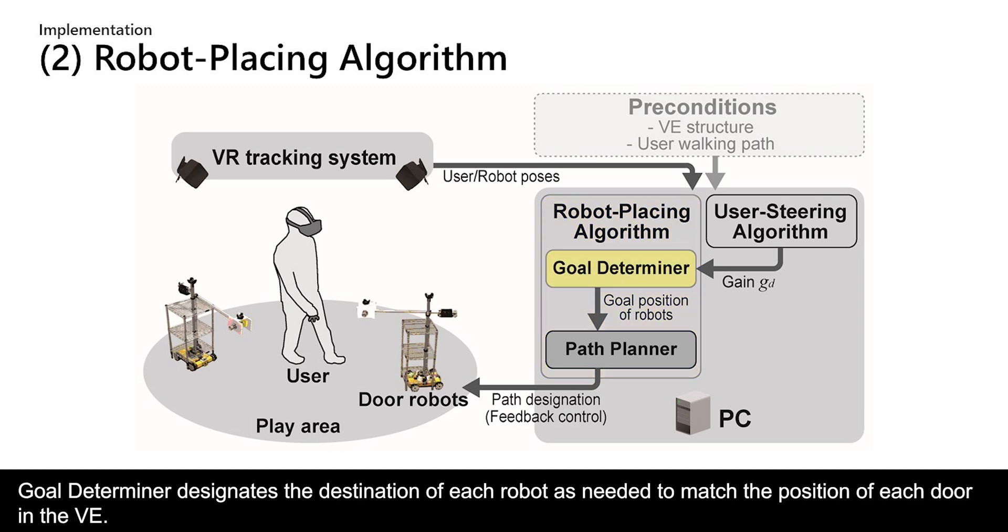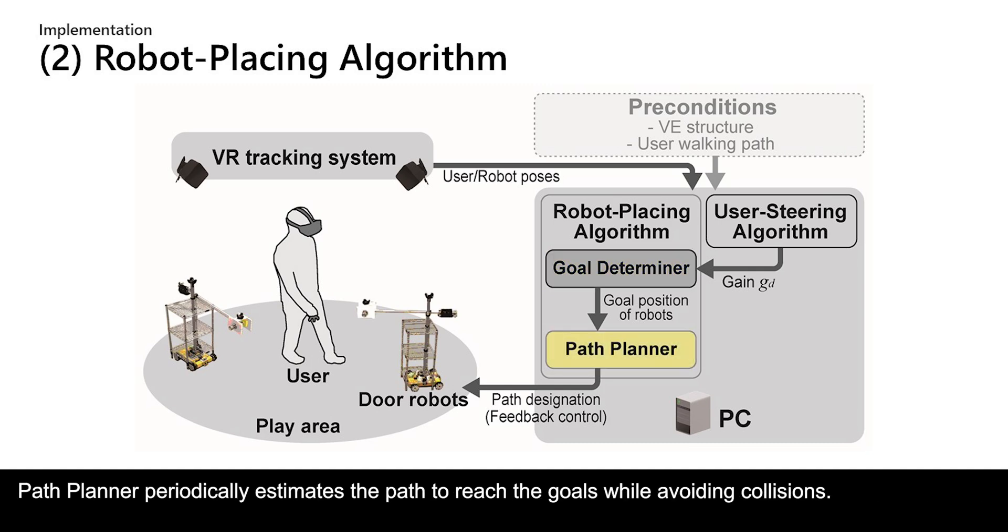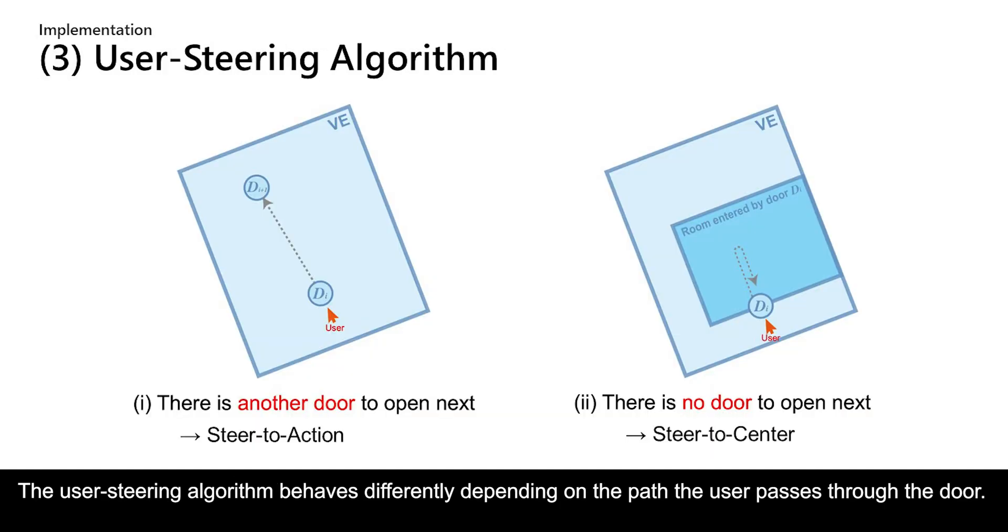The robot-placing algorithm mainly consists of Goal Determiner and Path Planner. Goal Determiner designates the destination of each robot as needed to match the position of each door in the virtual environment. Path Planner periodically estimates the path to reach the goals while avoiding collisions.